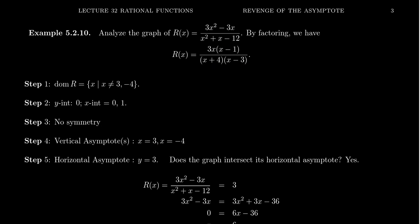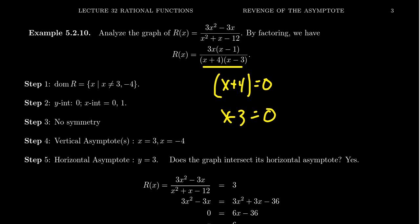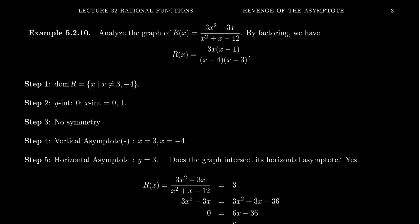Setting the denominator equal to zero: x + 4 = 0 gives x = -4, and x - 3 = 0 gives x = 3. These are the forbidden values from the domain. Since the function is in lowest terms, anything that makes the denominator zero gives a vertical asymptote. So the vertical asymptotes are x = 3 and x = -4.